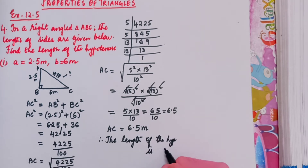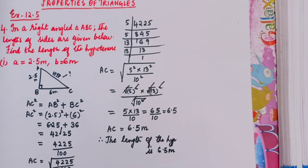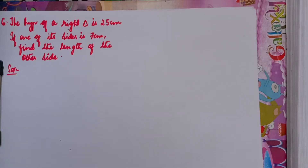Therefore, the length of the hypotenuse is 6.5 meters. I hope you understood this problem — it's very simple, just apply the Pythagoras property. Now let us move to the next problem, which is the sixth one.